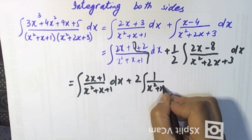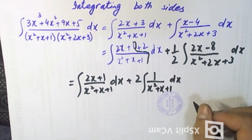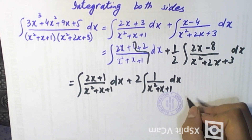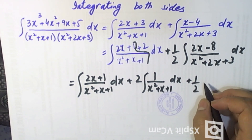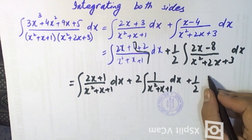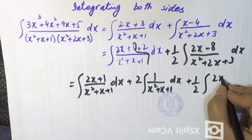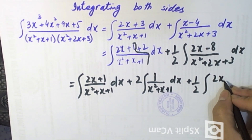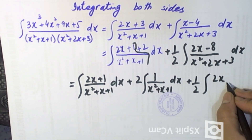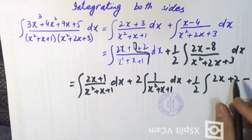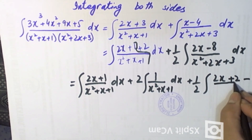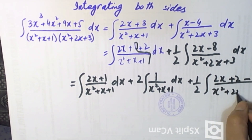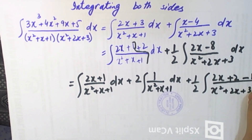Plus one over (x² + x + 1) dx, plus one-half of (2x + 2) — we add plus 2 once and minus 2 once — divided by (x² + 2x + 3) dx.